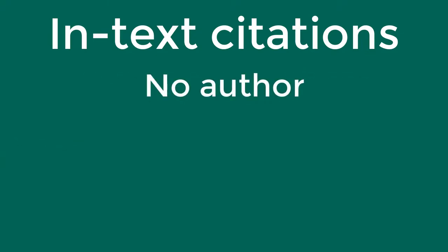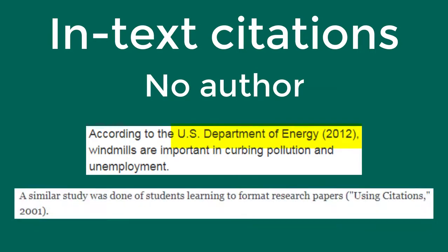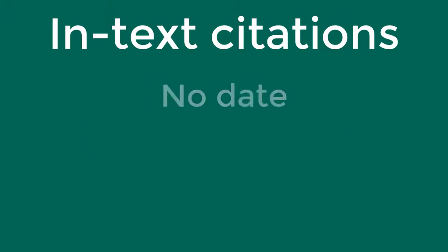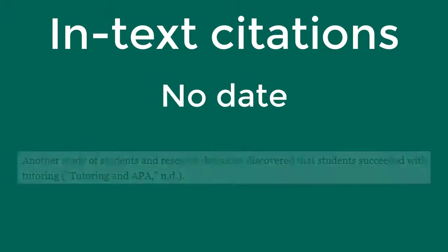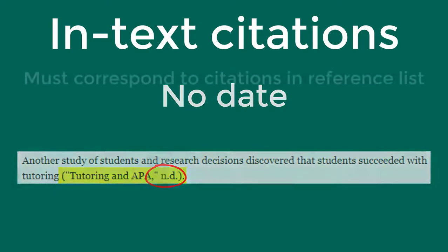If the material you are citing has no author, you might use the organization as the author. For example, your resource might be written by a government agency. Depending on the resource, you could also use the material title in place of the author. Also, if the material you are citing has no date, such as some web pages, use the abbreviation n.d. for 'no date' in place of the year.